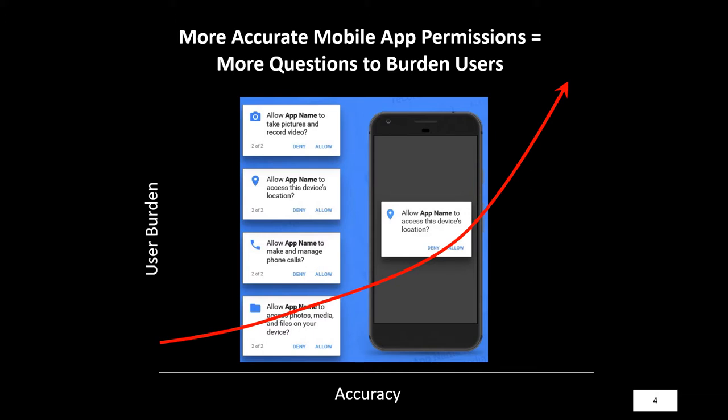The more accurate a mobile app permission is — one that can express the user's preferences in the type of granularity that they expect — the more questions are required in order to burden them. Prior research shows that purpose should be included as part of these mobile app permissions, but including it would result in even more questions that are even more burdensome.